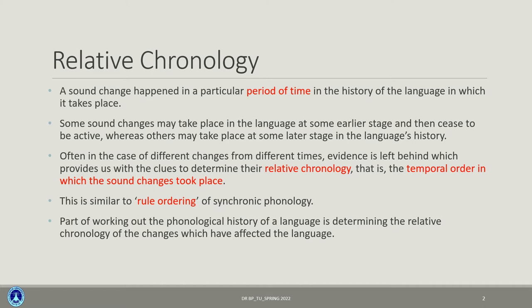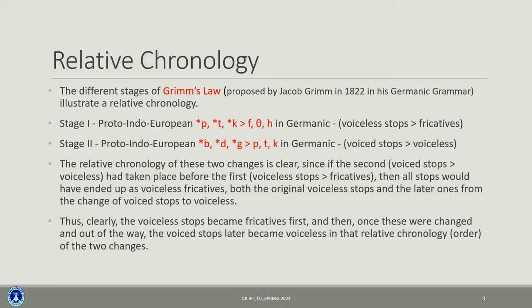Part of working out the phonological history of a language is determining how the relative chronology of those changes has affected the entire language's sound system. The different stages of Grimm's Law, first proposed by Jakob Grimm in 1822 in his Germanic Grammar, illustrates a particular case of relative chronology in the history of Germanic languages.